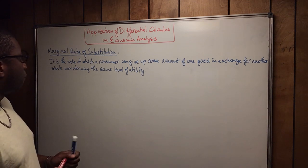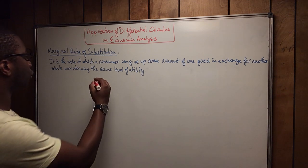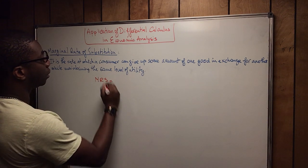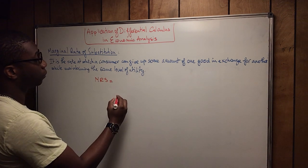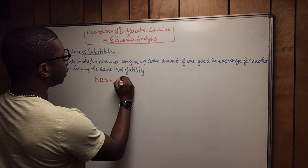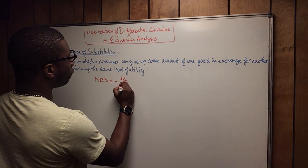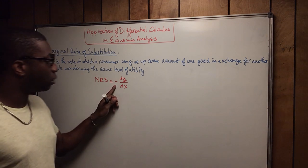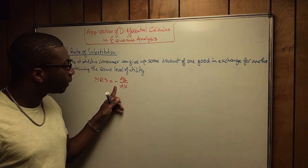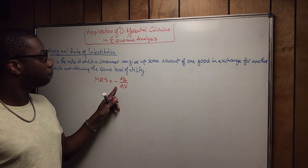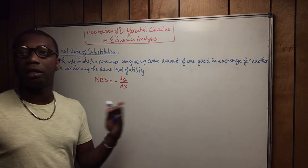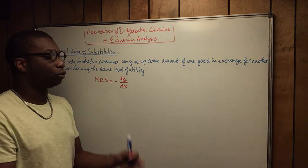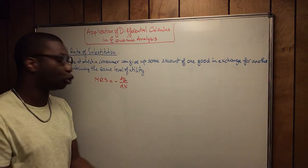The formula of the marginal rate of substitution is: MRS equals minus dy over dx. The minus sign implies that the relationship between the two goods is a negative relationship — you can already graph it as a downward slope.